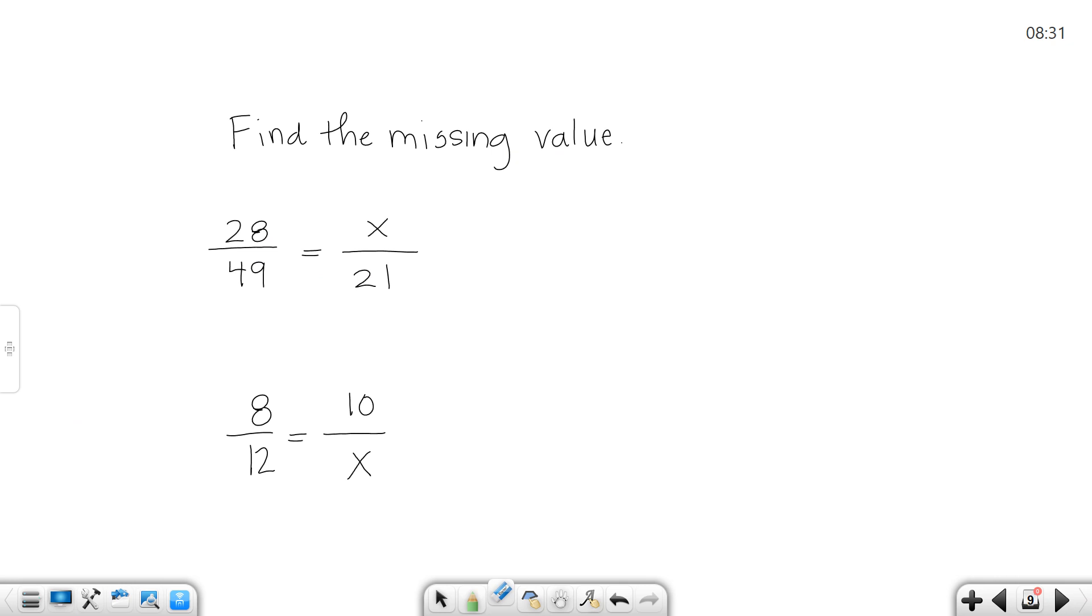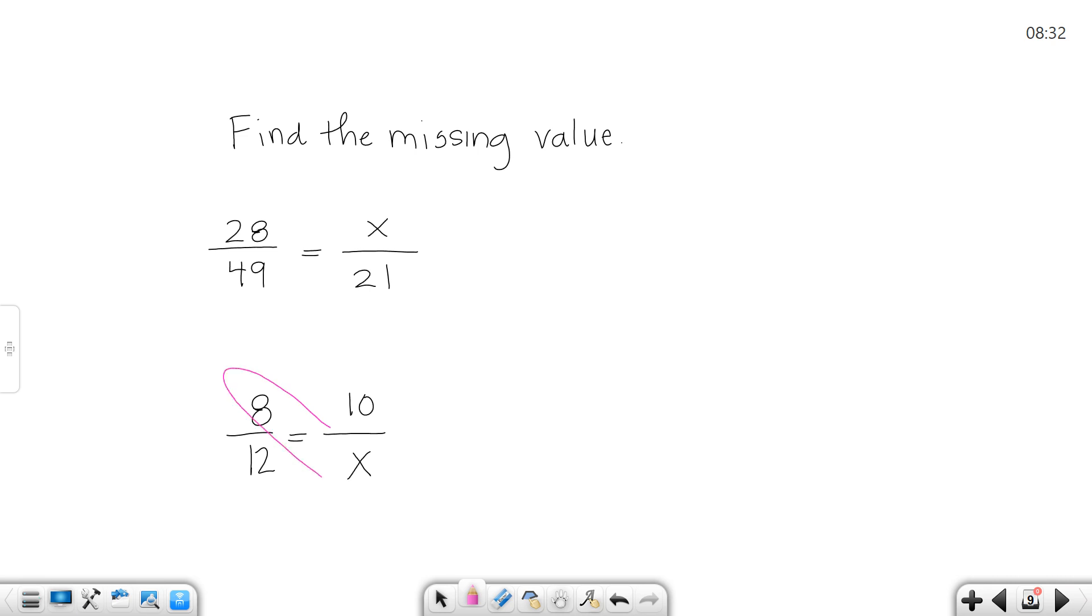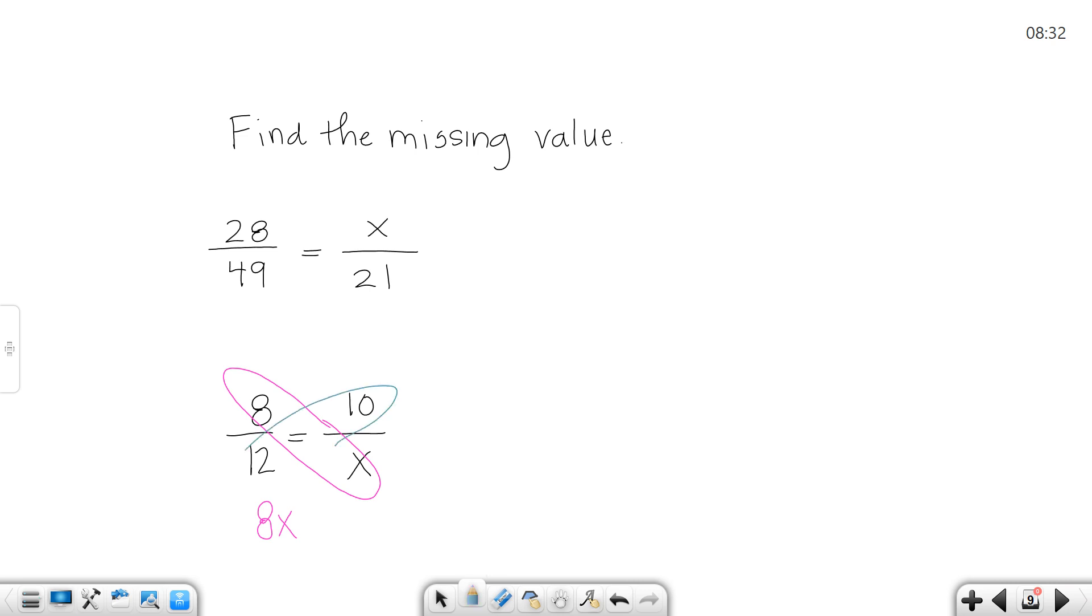So in my next example, I tell you that they are a proportion and then I ask you to solve it out. I'm going to go back to what we just did with the products. So if I multiply across this product, I get 8x. And if I multiply across this diagonal, I get 12 times 10, which is 120.